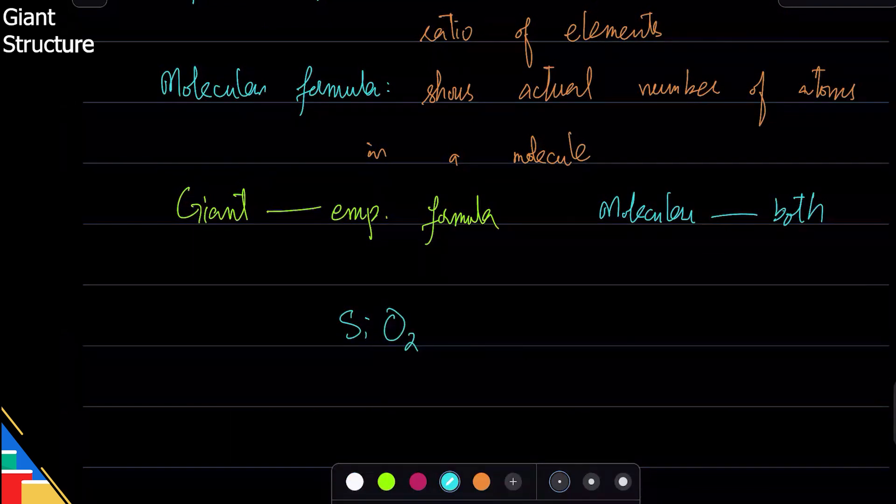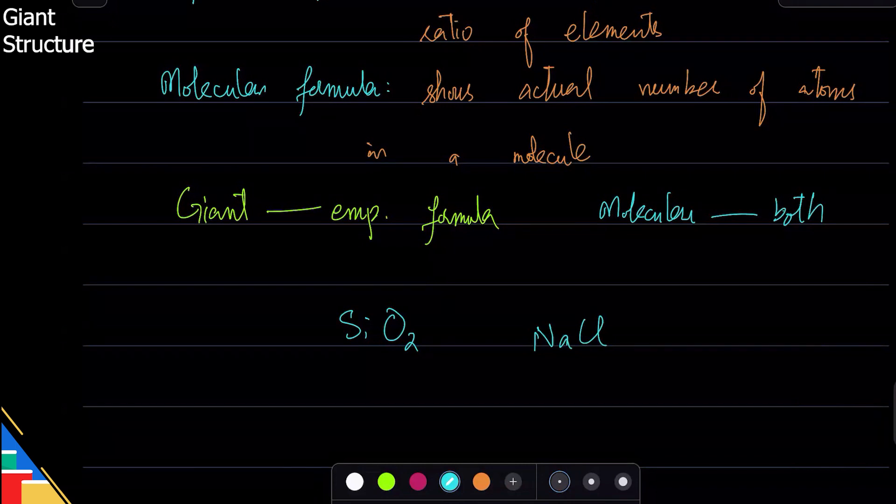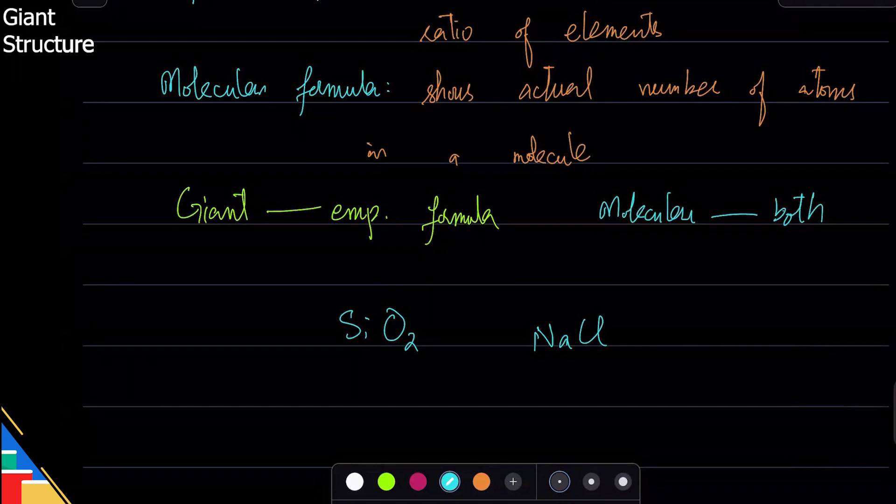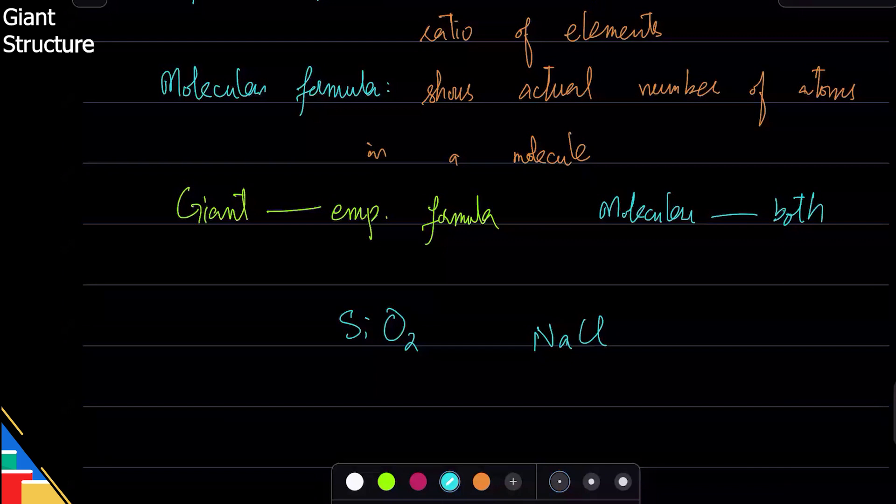This is the giant structure, so its empirical formula—the ratio is one silicon to two oxygen, so you write SiO2. When you write NaCl, you are saying the same thing: that there is one sodium and one chloride in that ratio. Similarly, MgCl2 means magnesium and chloride in that ratio—it is double chloride.